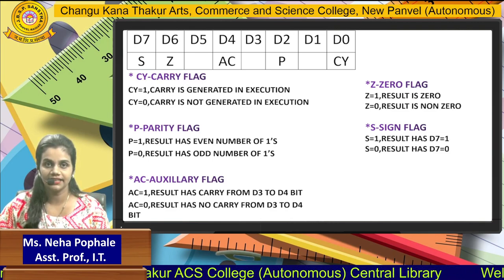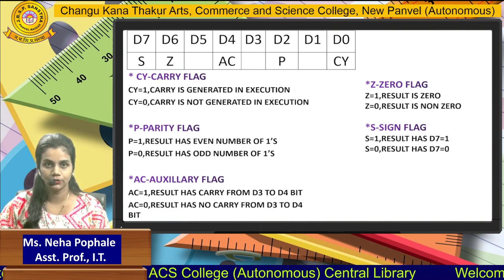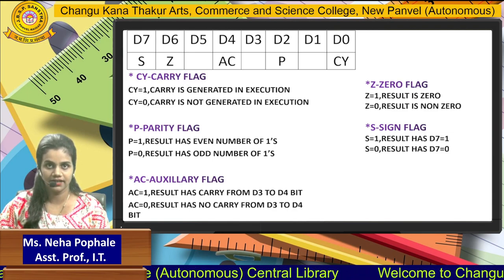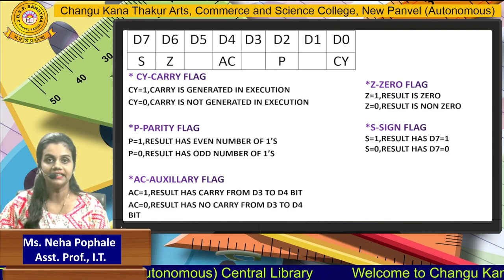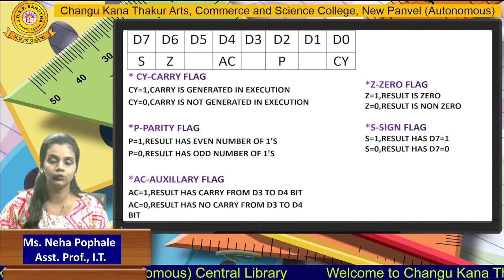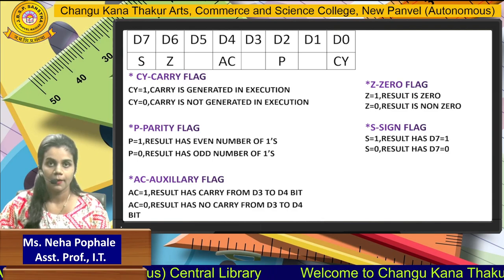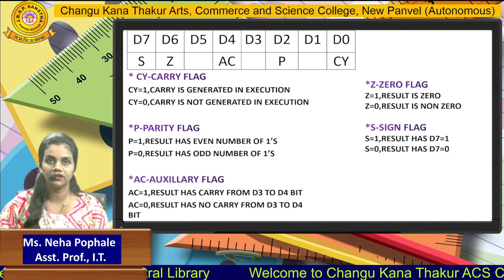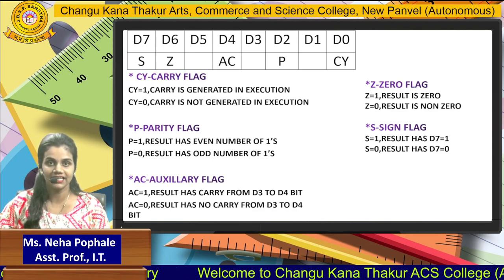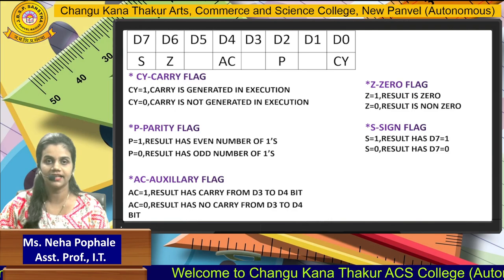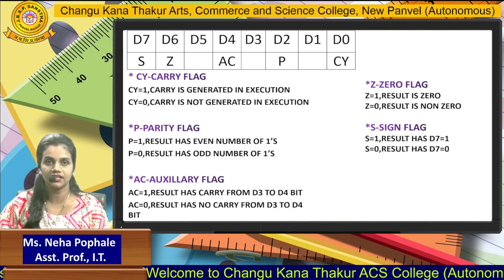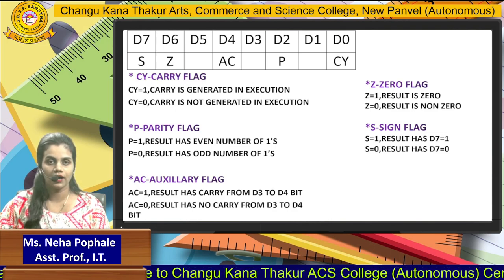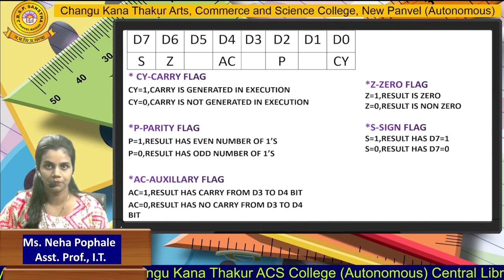Next is the auxiliary carry flag. It is set to 1 when there is a carry generated from D3 to D4 — that is, from the 4th bit to the 5th bit. If there is a carry generated, the auxiliary carry is set to 1; otherwise it is set to 0.